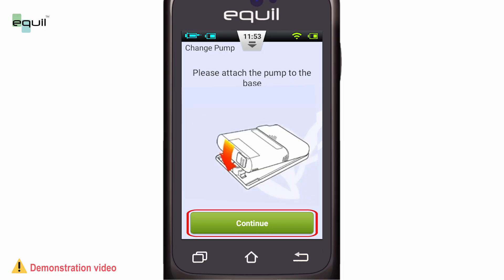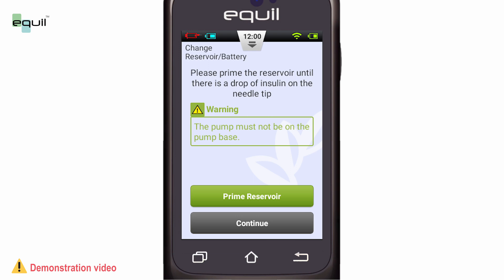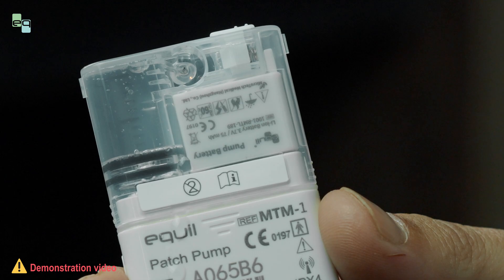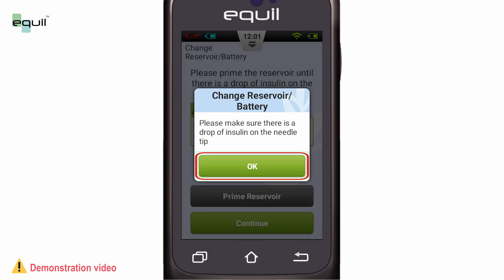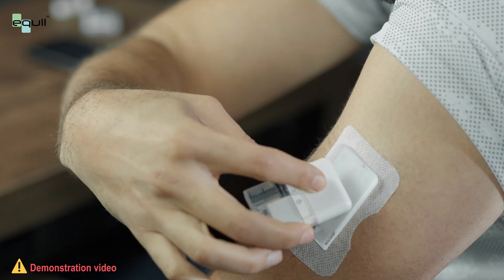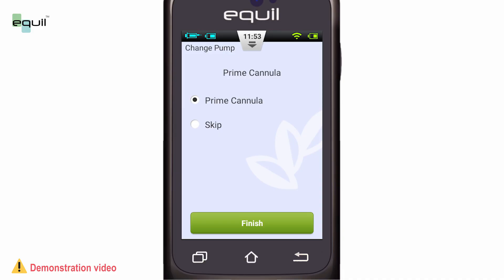Assemble pump and reservoir. Select Continue. Hold the pump as such. Select Prime Reservoir. And wait until we see an insulin drop. Select Yes in the confirmation message. Select Continue. Attach pump to its base, following the same previous instructions. Choose whether to prime the canula or not according to the condition explained earlier. Select Finish.